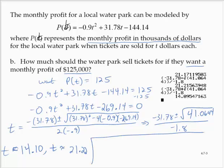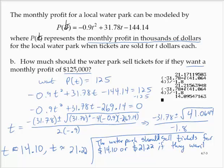So conclusion: they want a monthly profit of $125,000. The water park should sell the tickets for $14.10 or $21.22 if they want a profit of $125,000.